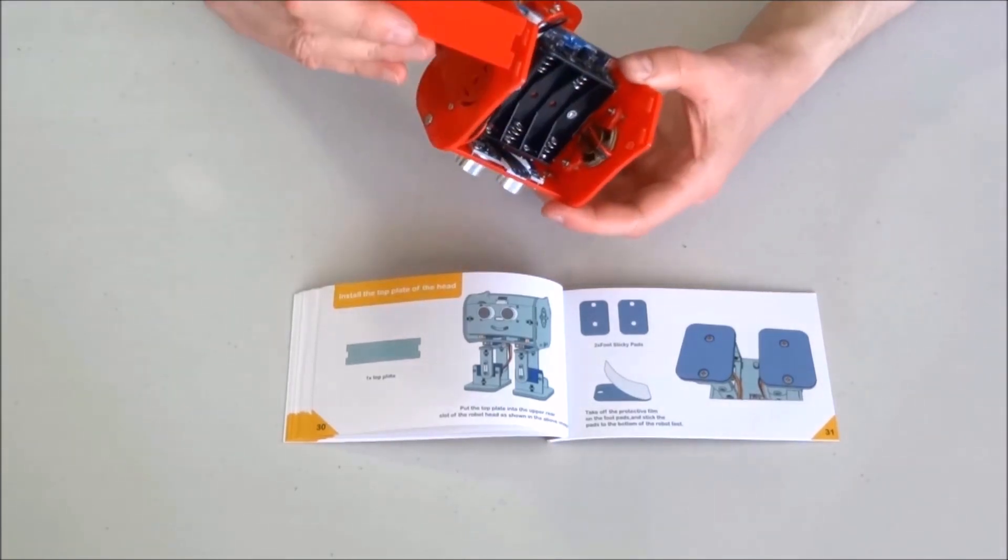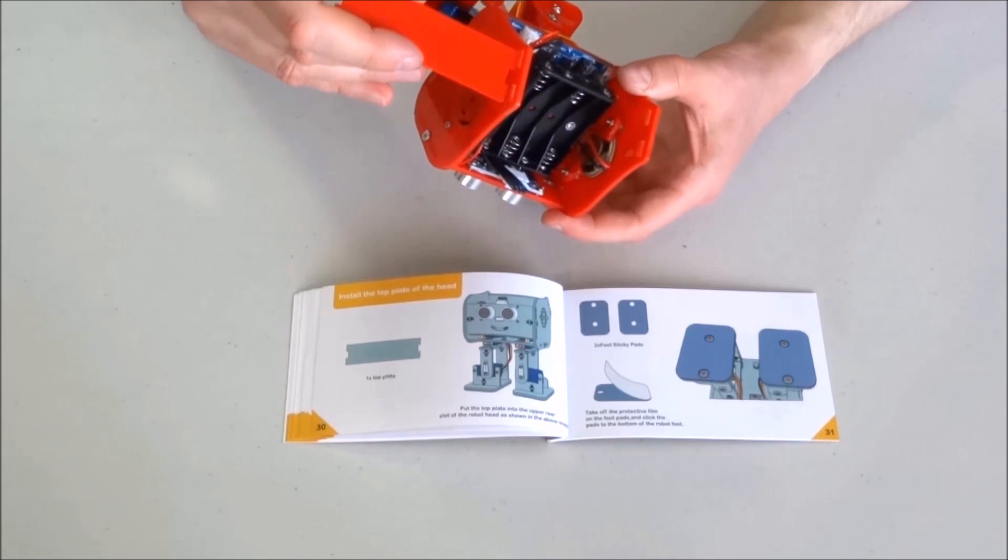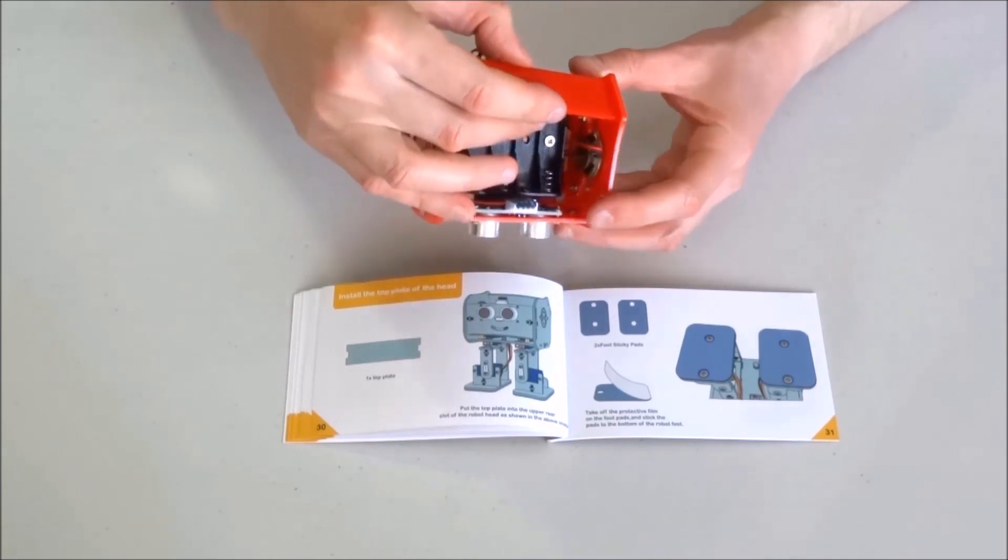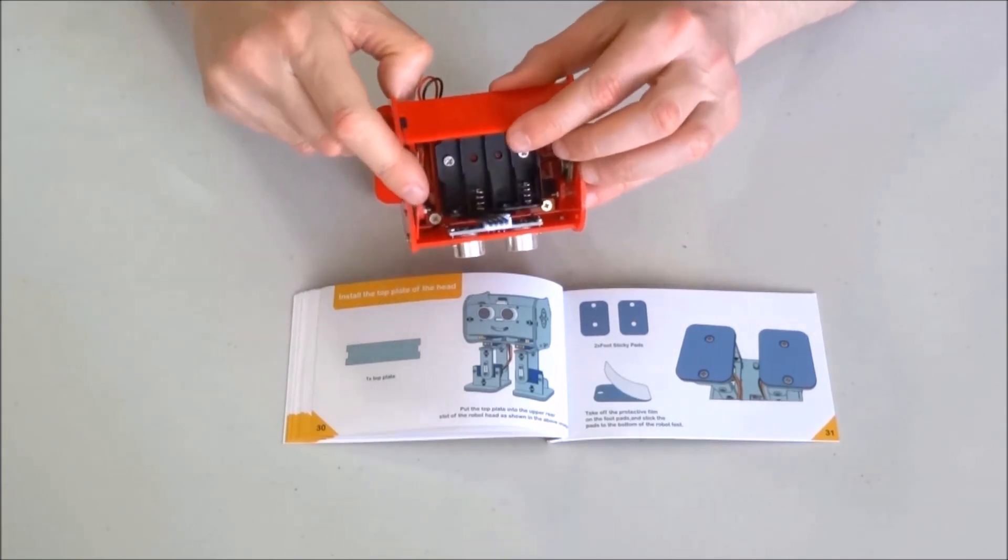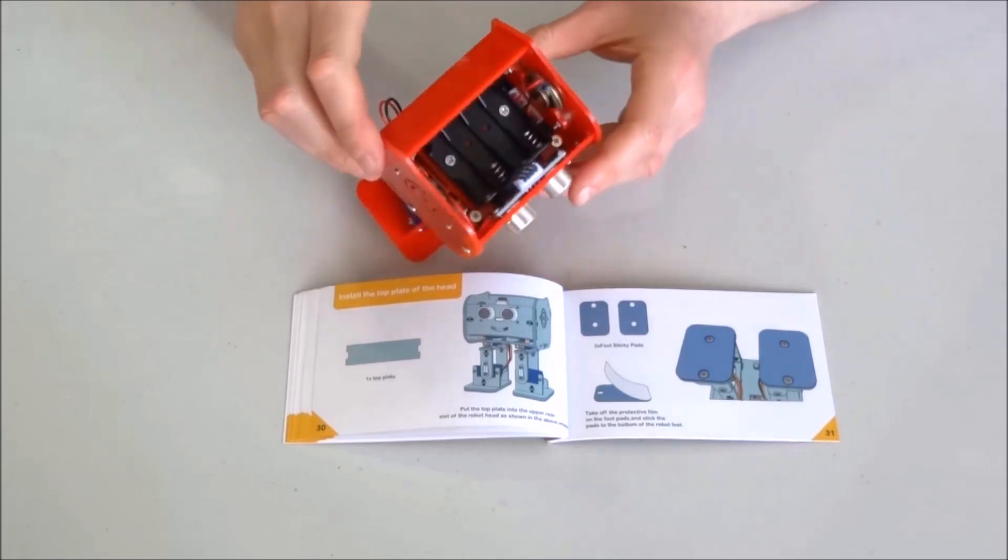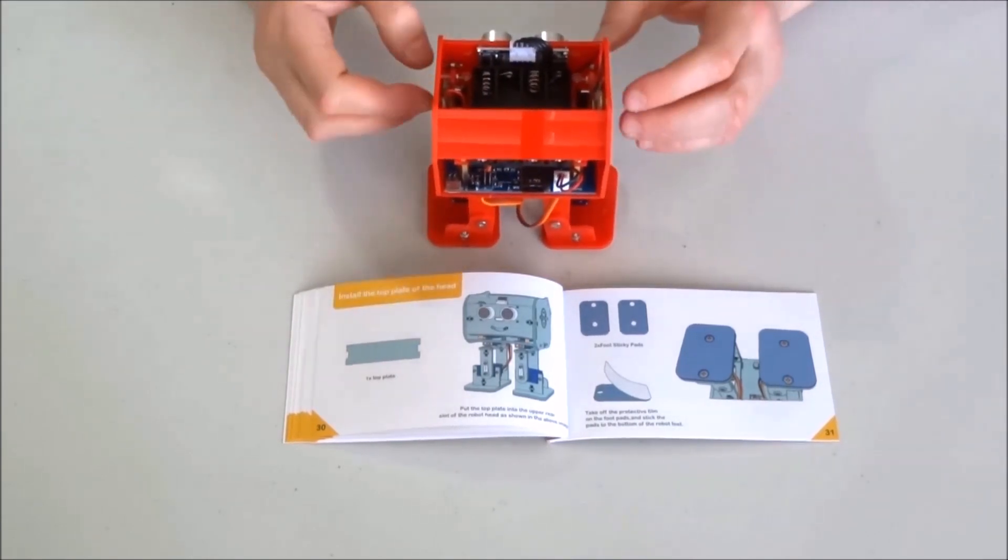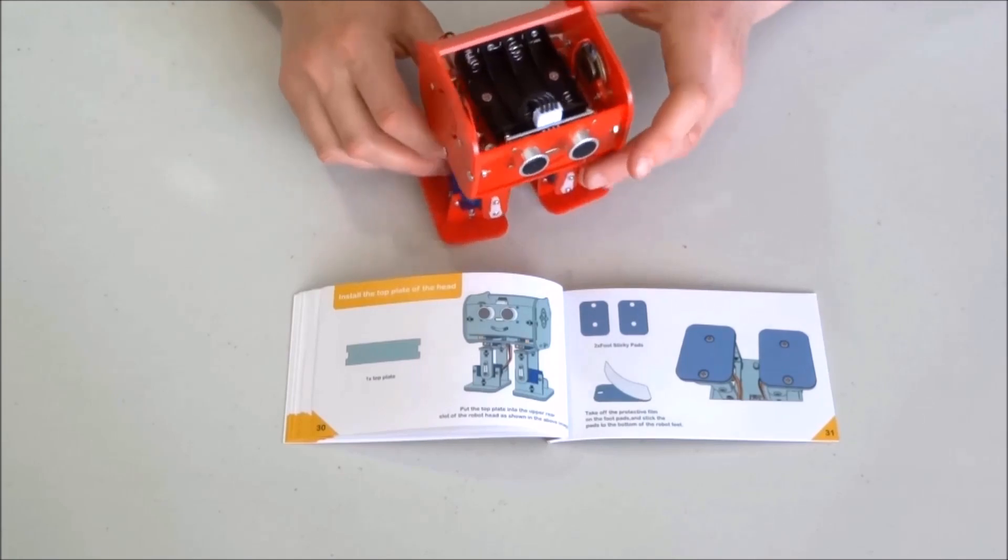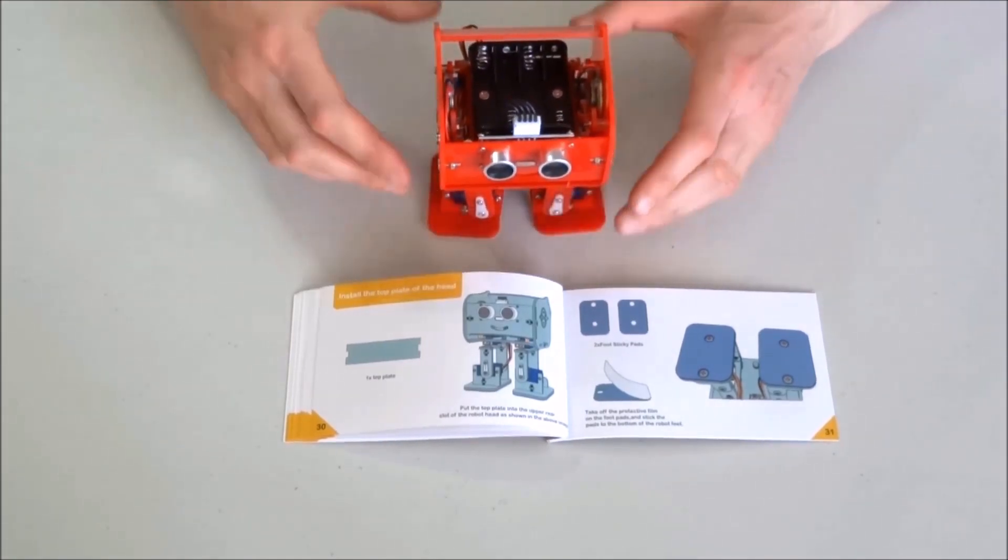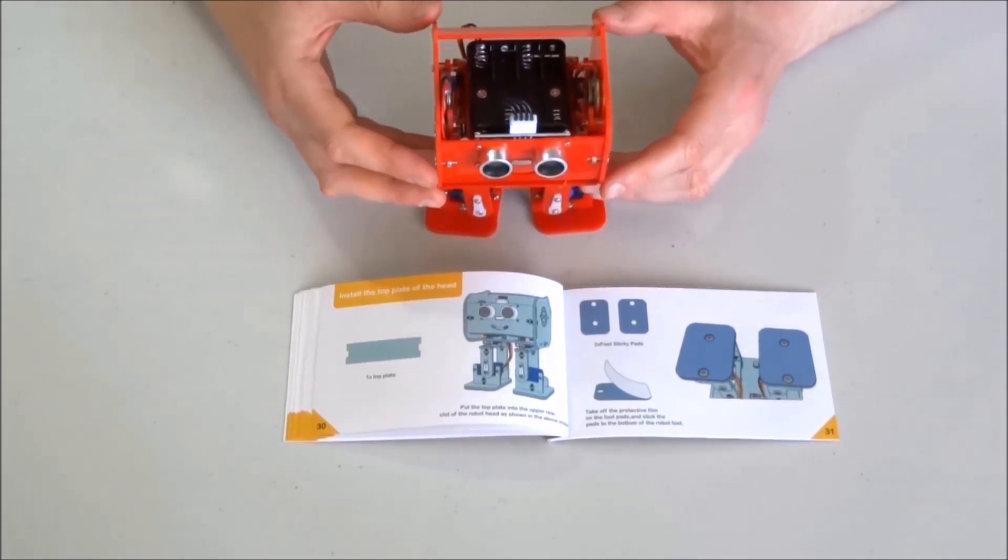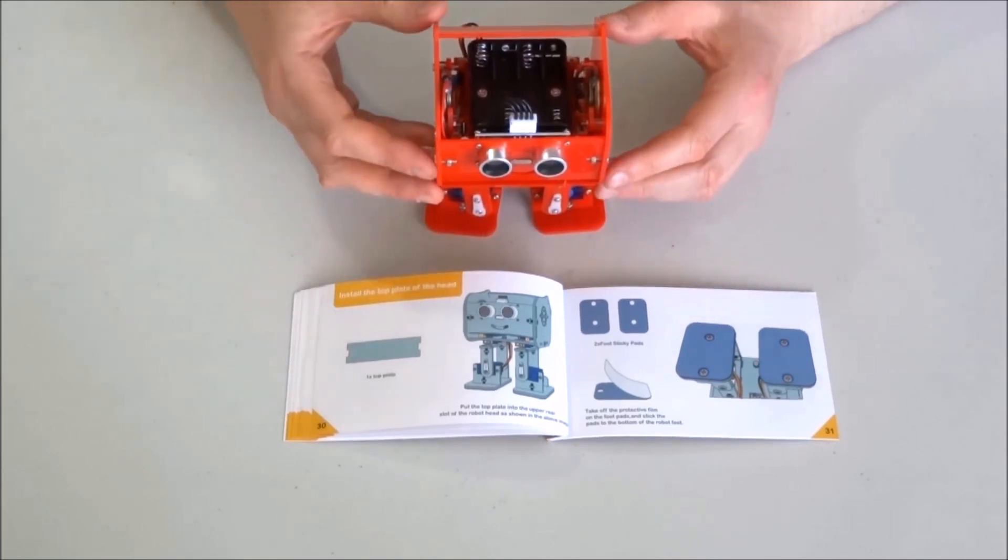Peel both sides. Now I will simply insert it into those slots here, like this. This plate is in place. All the plastic parts of the robot should now be in place.